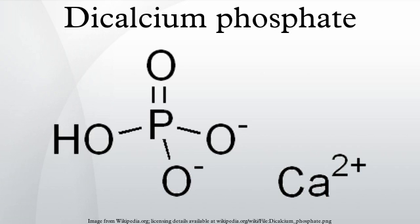Preparation: Dicalcium phosphate is produced by the reaction of calcium chloride and phosphoric acid: CaCl₂ + H₃PO₄ + 2 NaOH → CaHPO₄ + 2 NaCl + 2 H₂O. Calcium carbonate is also used in place of the calcium chloride and sodium hydroxide.